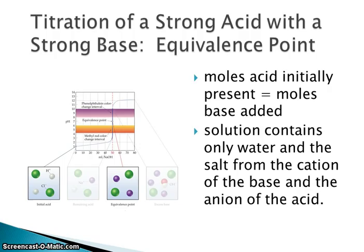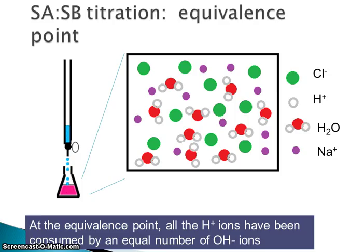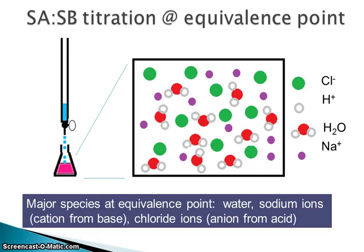You do have to keep the mole ratios in mind. At the equivalence point, the solution contains water and the salt — the salt made from the cation of the base (Na⁺) and the anion of the acid (Cl⁻), though they're really dissociated and hanging around as spectator ions. All of the hydrogen ions have been consumed by an equal number of OH⁻ ions; there's no H⁺ left and no OH⁻ present. The major species at the equivalence point are water, sodium ions, and chloride ions.